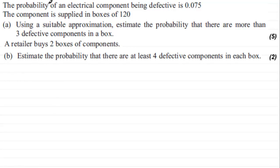So let's just read through this first of all. What we've got is the probability of an electrical component being defective is 0.075, and the component is supplied in boxes of 120. Using a suitable approximation, we've got to estimate the probability that there are more than three defective components in a box. And then in the second part, we're told that a retailer buys two boxes of components, and we've got to estimate the probability that there are at least four defective components in each box.